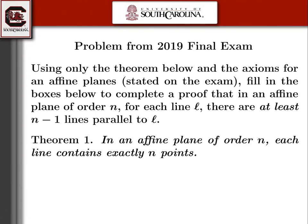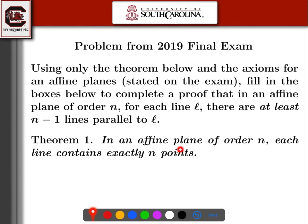This is another problem from the 2019 final exam — a proof you're supposed to know. You're to use this theorem: in an affine plane of order n, each line contains exactly n points. And you're to prove from this theorem and the axioms for a finite affine plane that in an affine plane of order n, each line L has at least n minus 1 lines parallel to it.